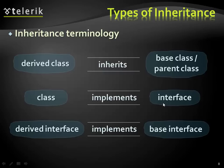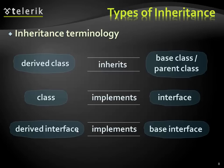We have a base class or parent class, and then a derived class which is the inheritor — we say the derived class inherits the base class. We also have an interface, which behaves something like a base class, but when we implement an interface we say the class implements it, not inherits it, because the interface is not its own object — it doesn't have its own body. It's just a set of rules. We can also have a hierarchy between interfaces.